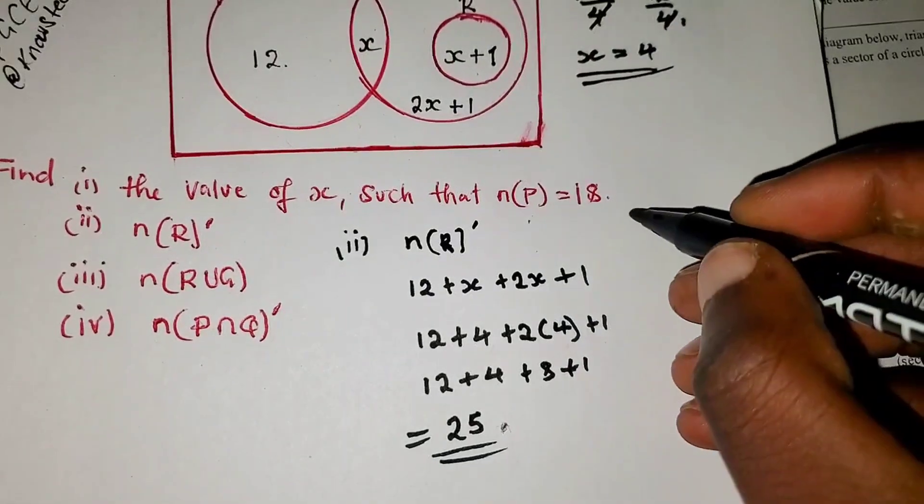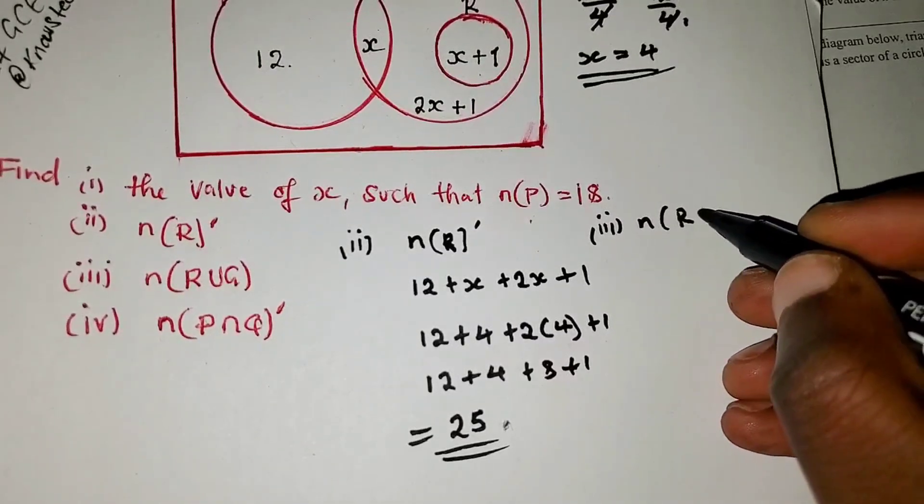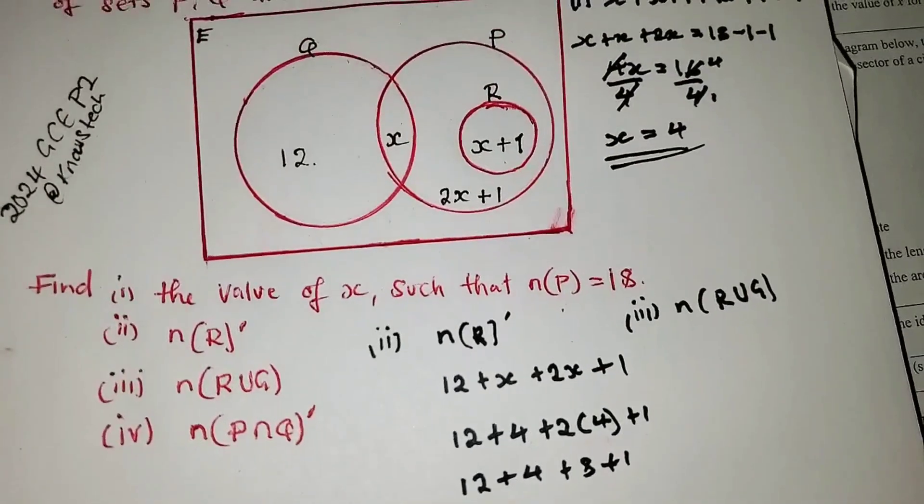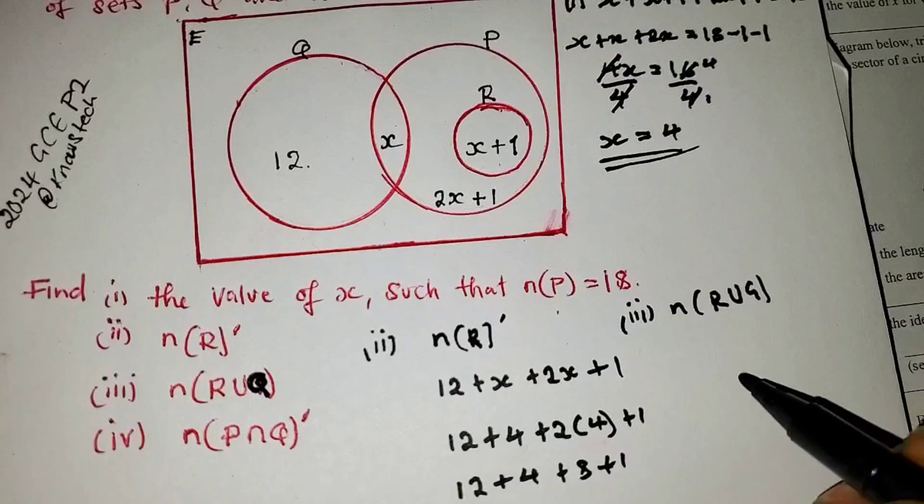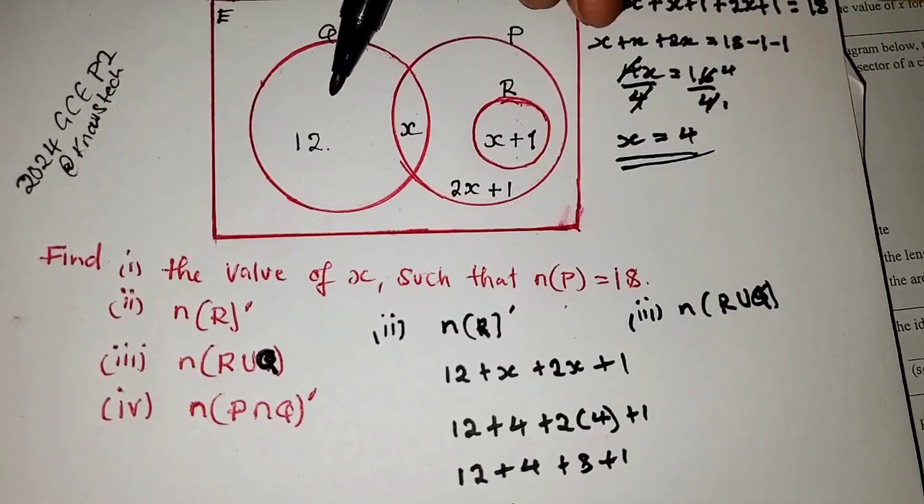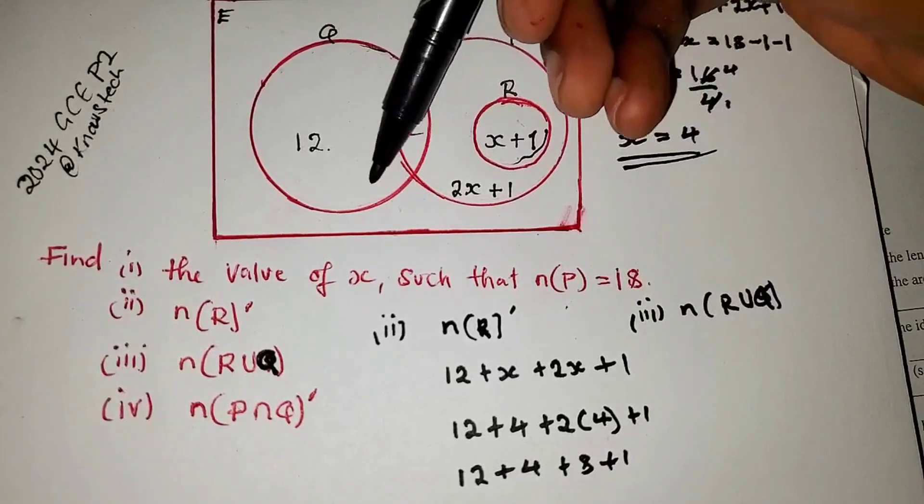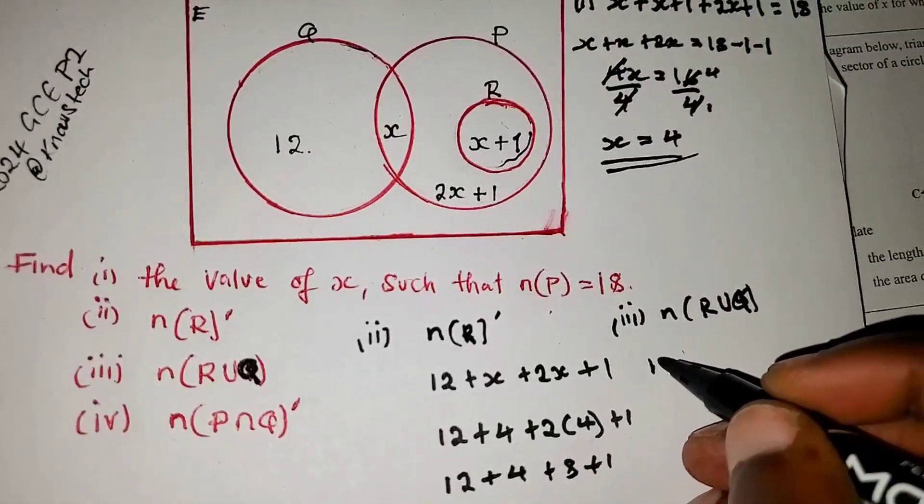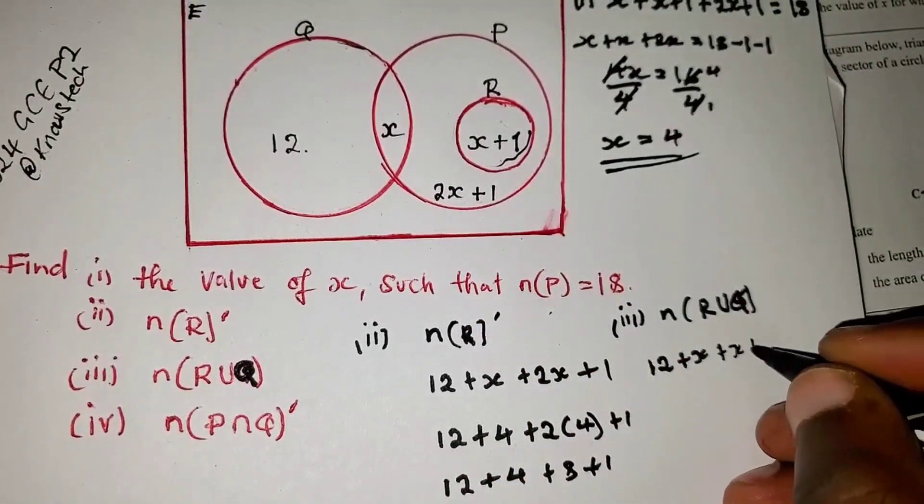Then question 3. We are asked to find the number of elements in R union Q. So we don't have a complement here. R union Q. This is R union Q. So it means that combine R, set R here, and set Q, including the x, since this x is also in set Q. So we are going to add 12 plus x, this x here, plus x plus 1.